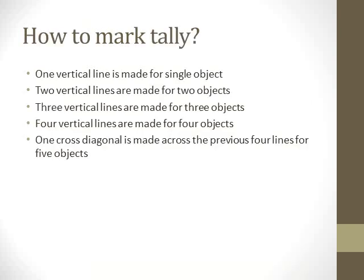How to mark tally: for every one count, we just make one vertical line. For example, if I am counting apples — for one apple I make one vertical line, for two apples two vertical lines, for three apples three vertical lines, for four I make four. But when it comes to five, I will not make five separate lines, because if I keep making lines it will be very difficult to count for a big number. So what I do is cross the previous four lines diagonally and consider it as a whole five.